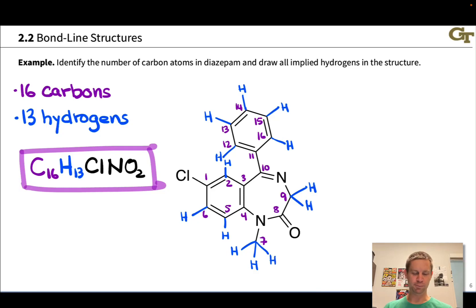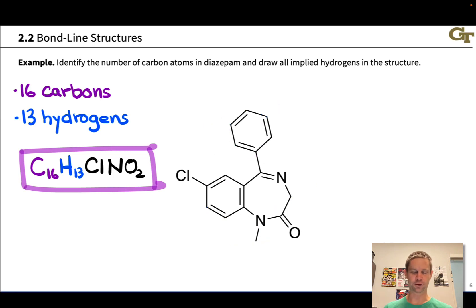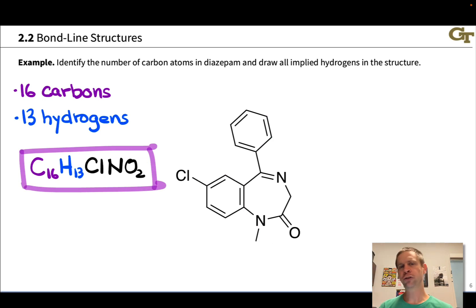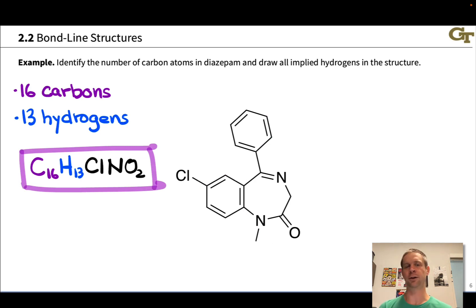Even if we take all those implied hydrogens that we added to the structure of diazepam when we were analyzing this online structure earlier and erase them all, we're still left with the question of what matters here? What is important? What should I be looking at? What should my eye be drawn to? When you're just starting out with your studies of organic chemistry, this can be a very difficult question to answer, and the subject of this video is one concept that's going to help you orient yourself to see molecules in the right way.